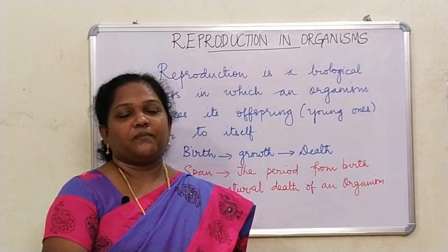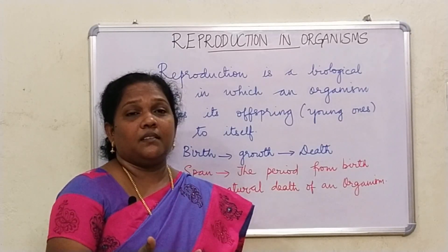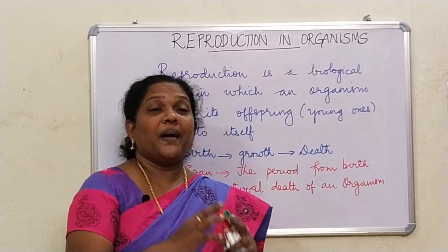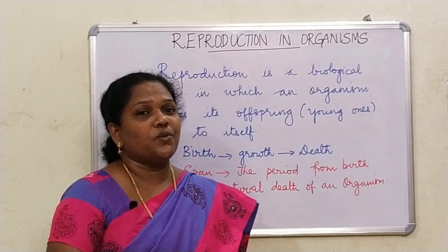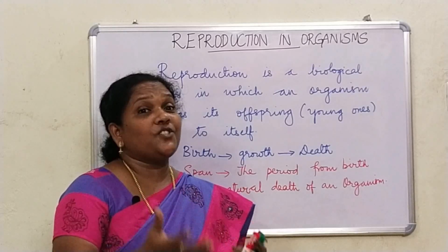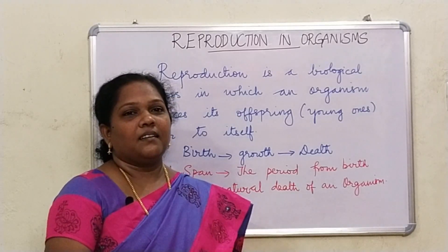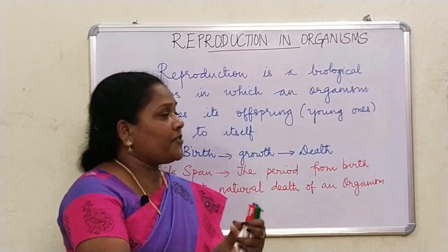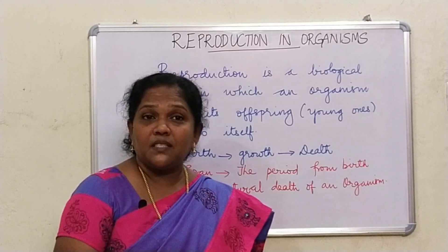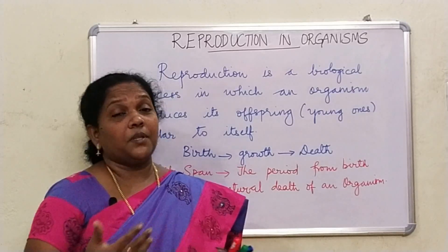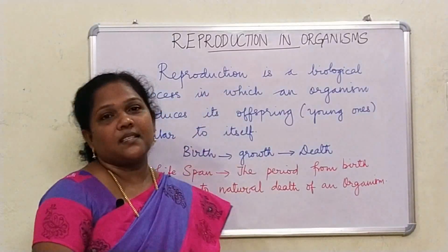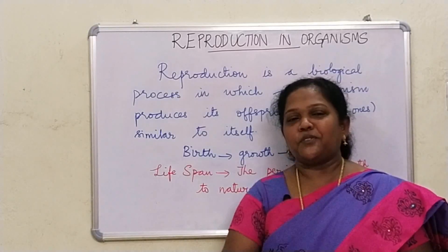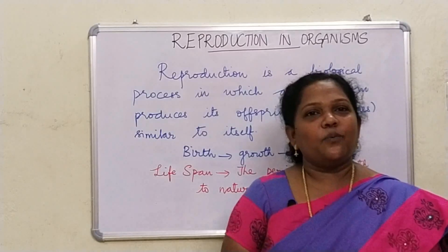No individual is immortal — the death of every individual organism is a certainty. A very good example is Amoeba, a single-celled organism. We normally say there is no natural death in Amoeba because the parent, when it undergoes cell division, produces two daughter cells, so the parent itself ceases to exist. Now, when you talk about the types of reproduction, there are two types: sexual reproduction and asexual reproduction.